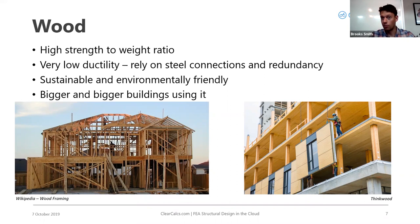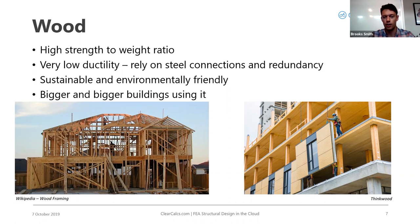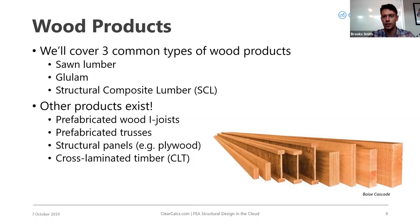A big perk that's becoming more relevant is that wood is sustainable and environmentally friendly. Forests are renewable when managed properly, and wood is a carbon sink, which is great for LEED certification. We're seeing bigger and bigger buildings using it — recently the UBC Commons in Vancouver, an 18-story university residence, was completed entirely in wood. There are three main wood product types: sawn lumber, glulam, and structural composite lumber.